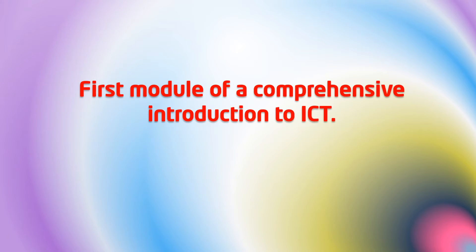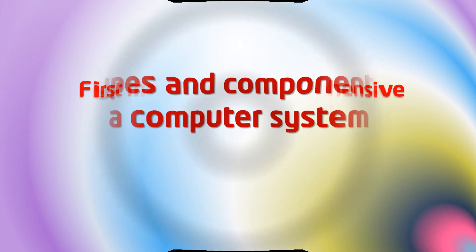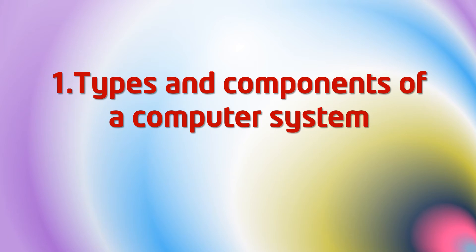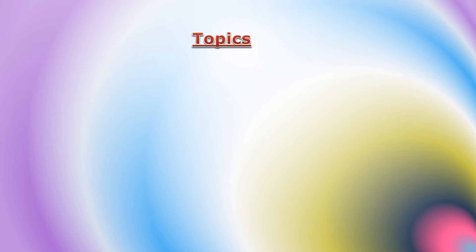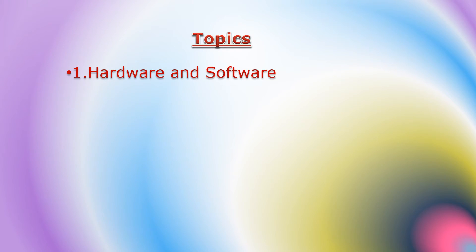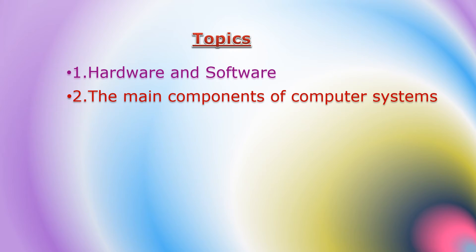This course is the first module of a comprehensive introduction to ICT. Section one covers types and components of computer systems. In this section you will learn about hardware and software, the main components of computer systems, operating systems, and types of computer.